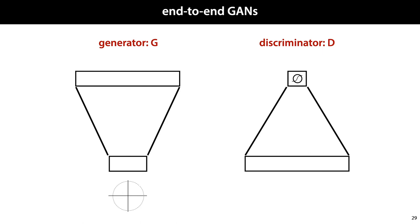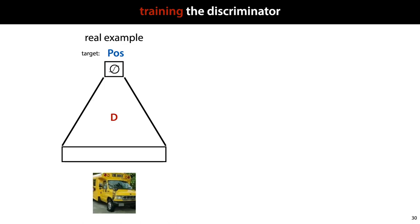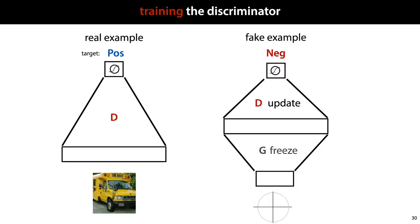If we have other images that don't belong to the target class, we can add those to the negative examples as well. But often the positive class is just a set of images sampled from a distribution, like a collection of images of human faces, and the negative class consists only of the fake images created by the generator. To train the discriminator, we feed it examples from the positive class and train it to classify these as positive. We also sample images from the generator, whose weights we keep fixed, and train the discriminator to classify these as negative. At first, these will just be random noise, but there's little harm in telling the network that such images are not buses, or whatever our positive class is.